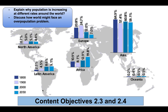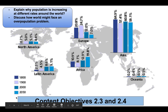Continuing with the unit on population, today's content objectives are: one, explain why populations are increasing at different rates around the world; and two, discuss how the world might face an overpopulation problem. You can examine this bar chart and notice the change over 200 years and projections for the next 50 years.